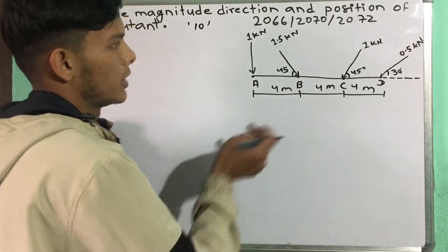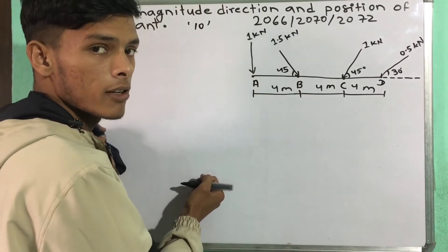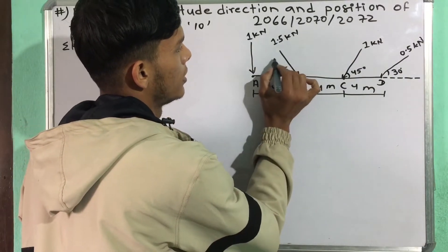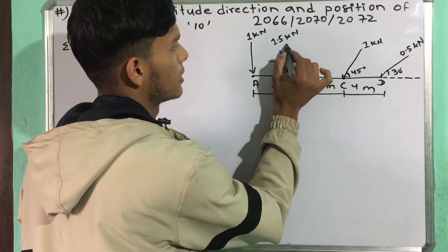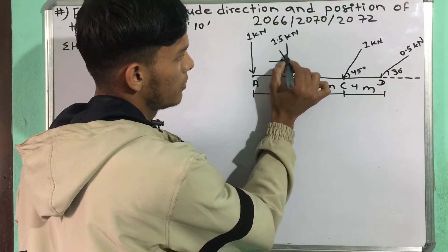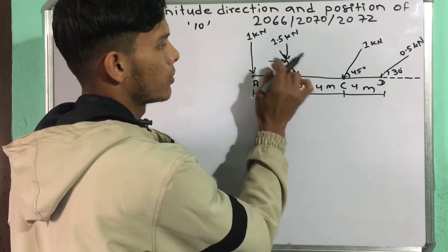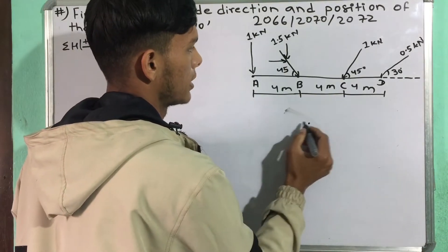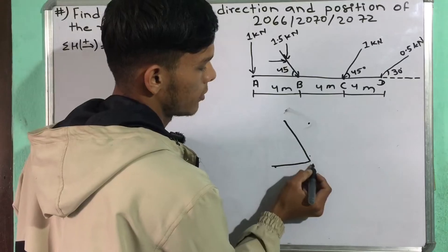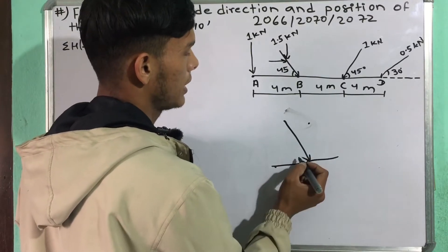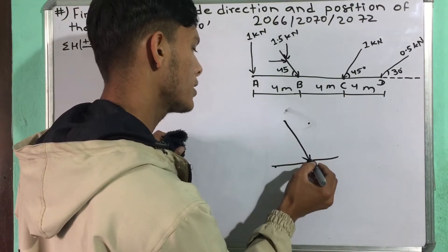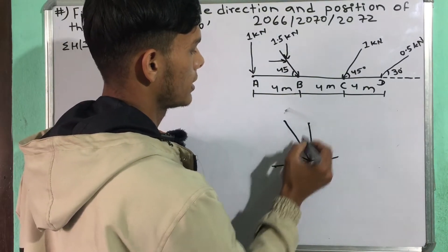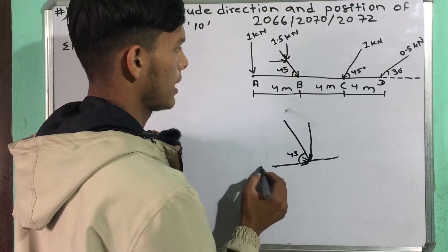We need to find the fourth point. We need to use the horizontal force itself. The horizontal force itself — the direction is equal to 0. This point is equal to 0.